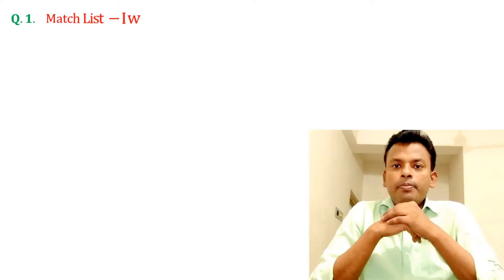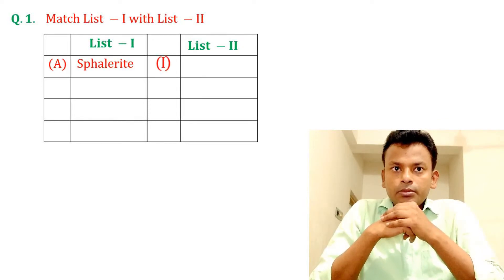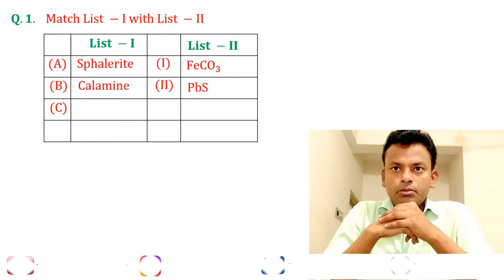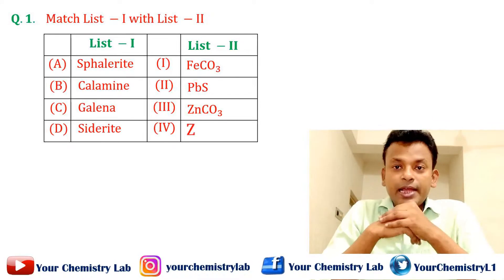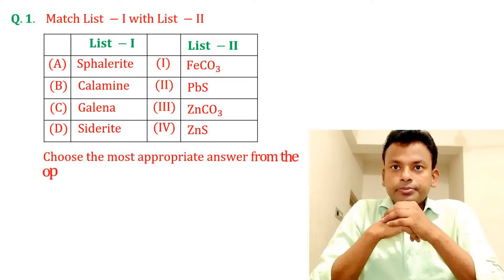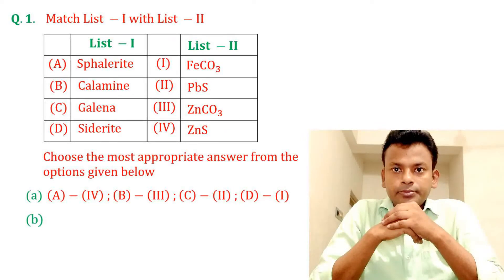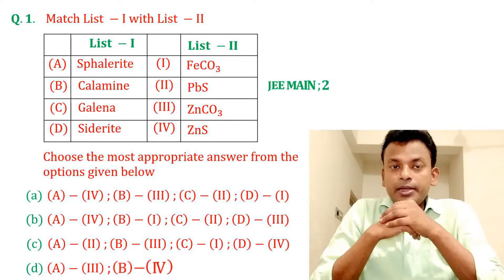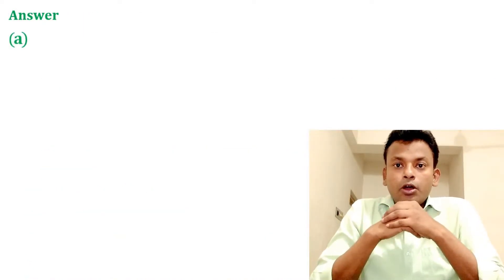Question number one: Match list one with list two. Choose the most appropriate answer from the options given below. This question was set in JMN 24th June 2022 morning shift. Answer: Option A is the correct answer.